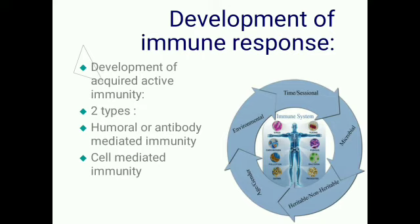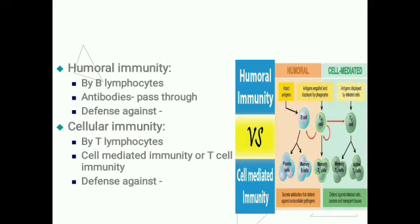We now discuss development of immune response, also known as development of acquired active immunity, which is mainly of two types: humoral or antibody-mediated immunity, and cell-mediated immunity. Humoral immunity is by B lymphocytes — antibodies pass through humors and provide defense against bacterial as well as viral infections. Cell-mediated immunity is provided by T lymphocytes; it provides defense against viral infection, bacterial infection, as well as allergic reaction and graft rejection of transplanted tissue.